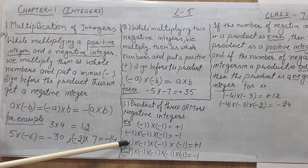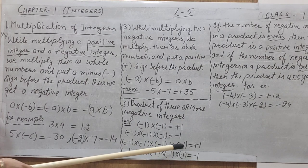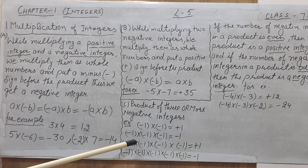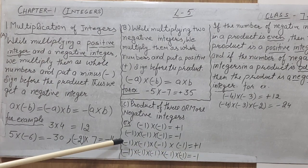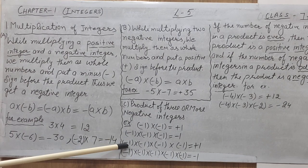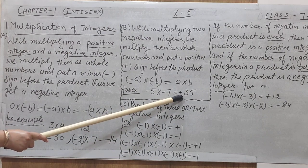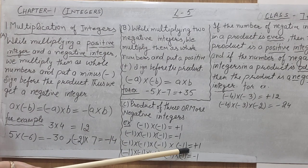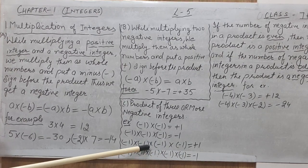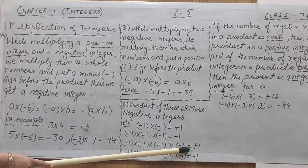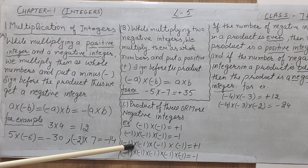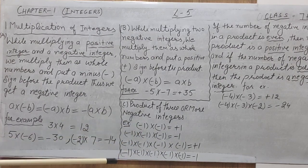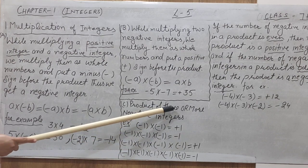Now, for four negative integers: minus 1 multiplied by minus 1, minus 1, and minus 1 — taken four times. The numbers multiply to 1. For the sign: the first two negative integers give a positive sign, and the last two negative integers also give a positive sign. We can put them in pairs — one positive from the first pair and one positive from the second pair — and two positive signs multiplied give a positive result.